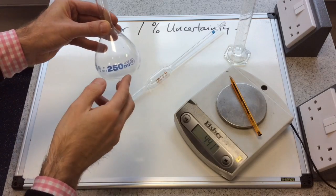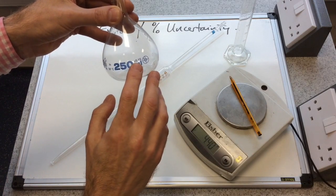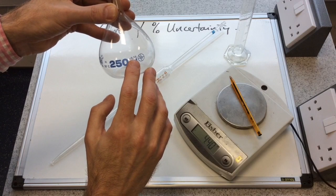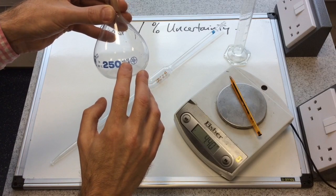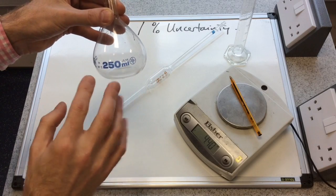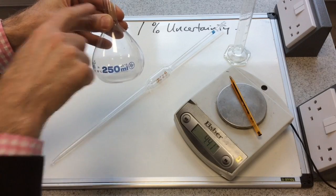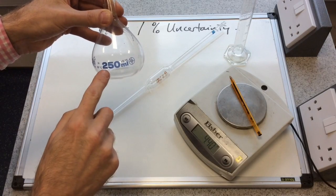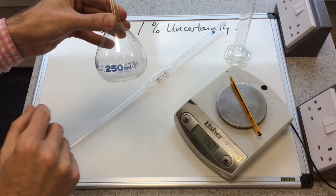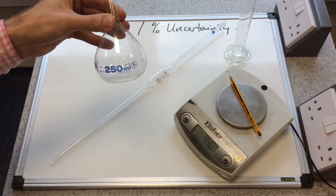If I bring this closer to the camera, there's a plus or minus 0.15 marked on there. So what that's saying is that when the meniscus is exactly on the line, there's a slight uncertainty as to how much liquid is actually in there.